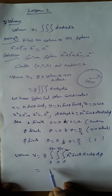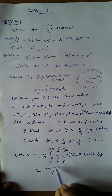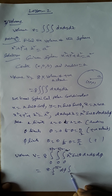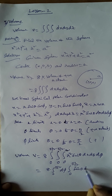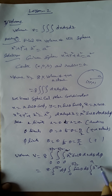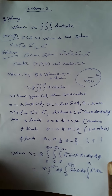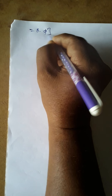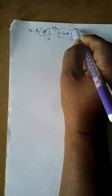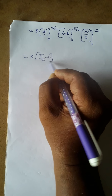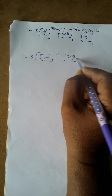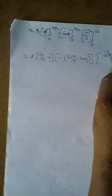So V = 8 × integral from 0 to π/2 dφ × integral from 0 to π/2 sin θ dθ × integral from 0 to a r² dr. Integrating: [φ] from 0 to π/2, [−cos θ] from 0 to π/2, and [r³/3] from 0 to a. This gives 8 × (π/2) × (−cos(π/2) + cos 0) × (a³/3).